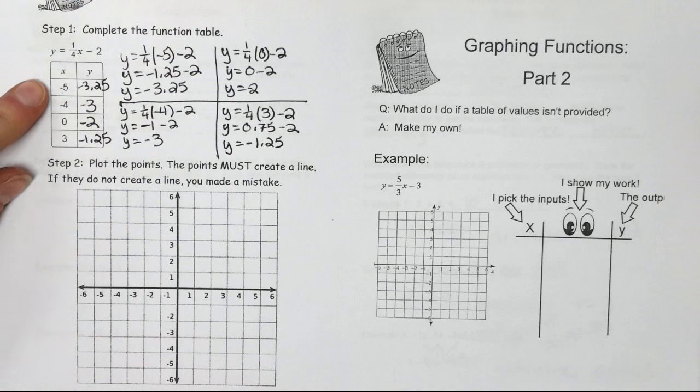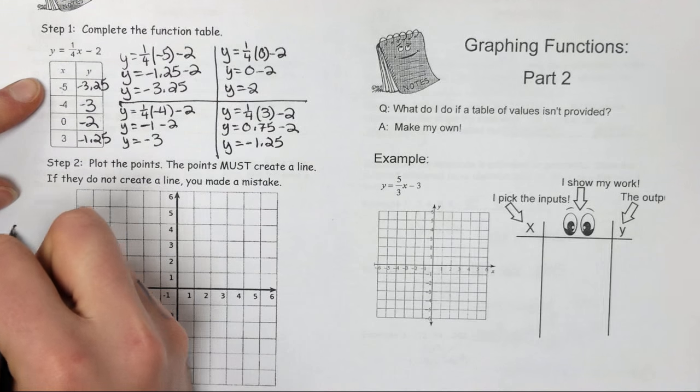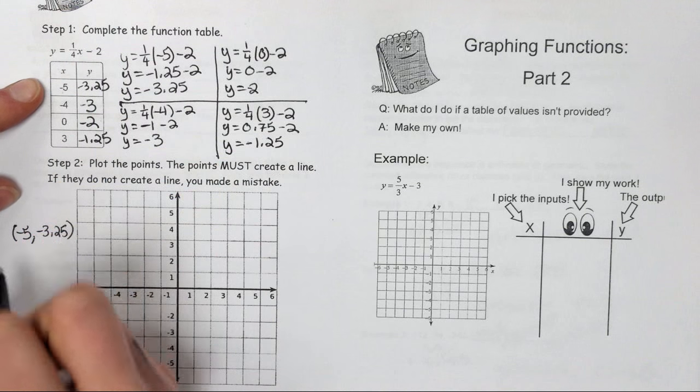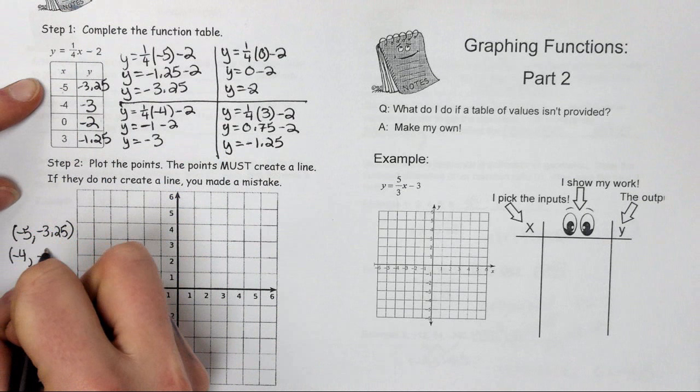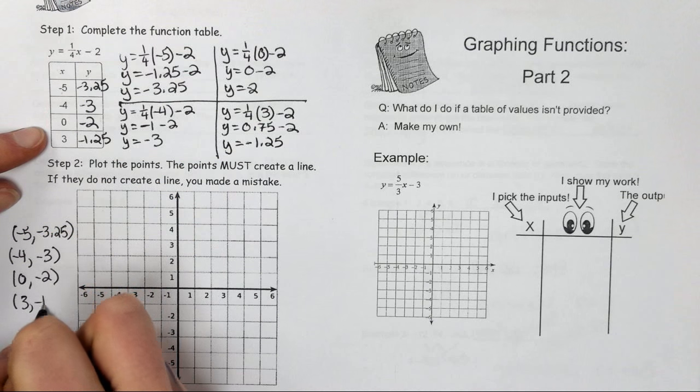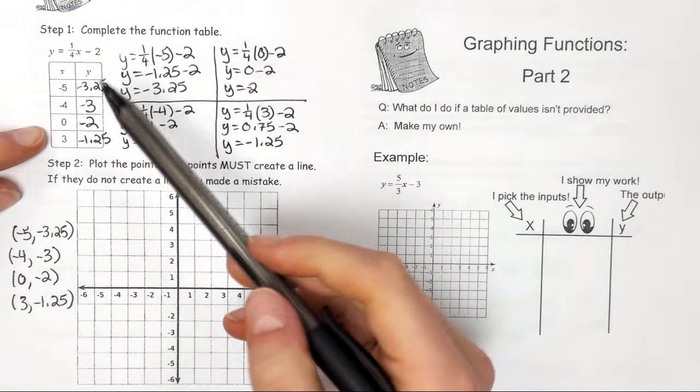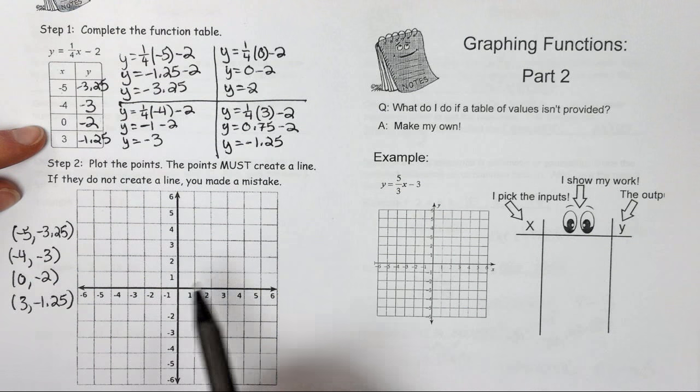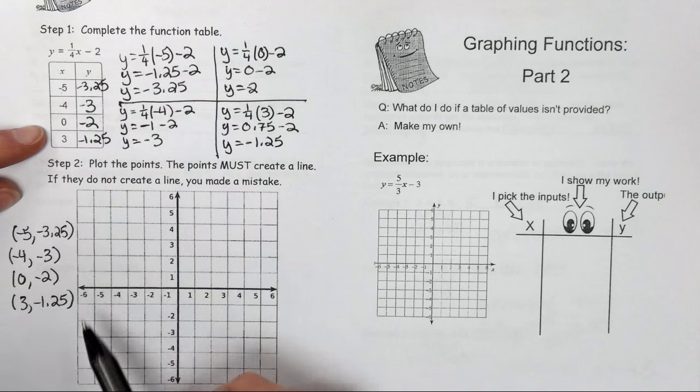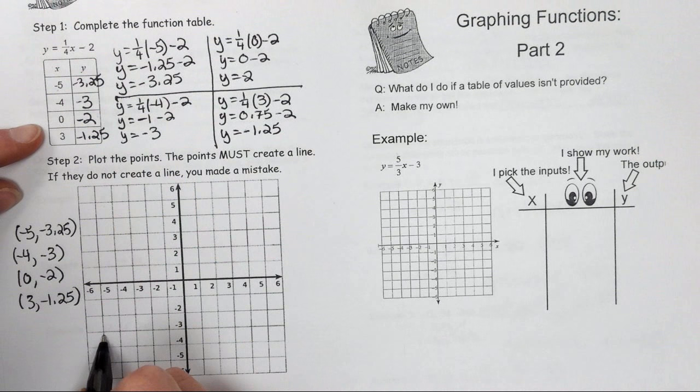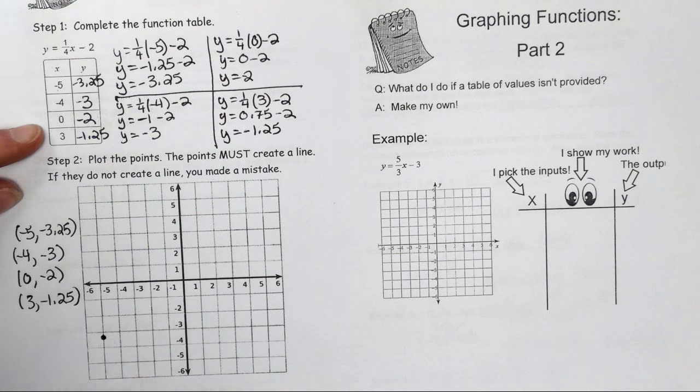These are all going to be my ordered pairs. The x value is the x value in the ordered pair, and the y value is the y value in the ordered pair. You just put parentheses around it and put a comma in between, and there's your ordered pair. So my first ordered pair is negative 5, negative 3.25. That's going to be a little bit more than negative 3, about right here.